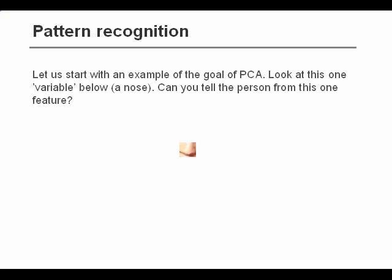Let's start with a simple example of how the brain works. If we want to recognize a face, we usually don't look at variables one at a time. Let's have a look at one variable or one feature — the nose — and try and figure out who that person might be.